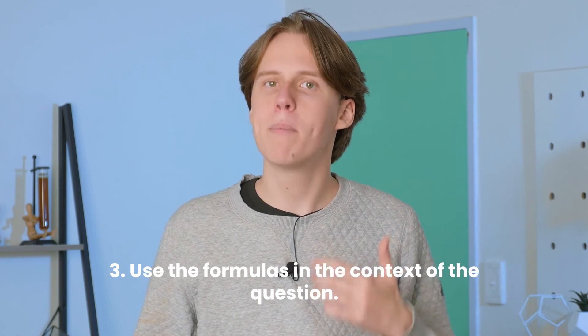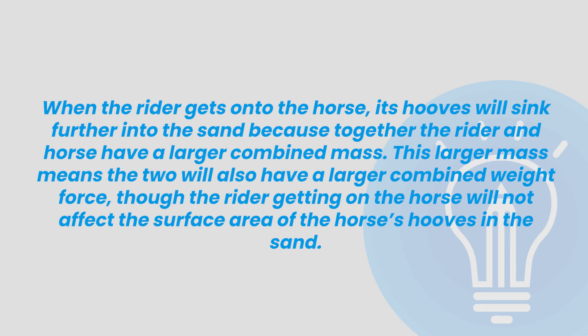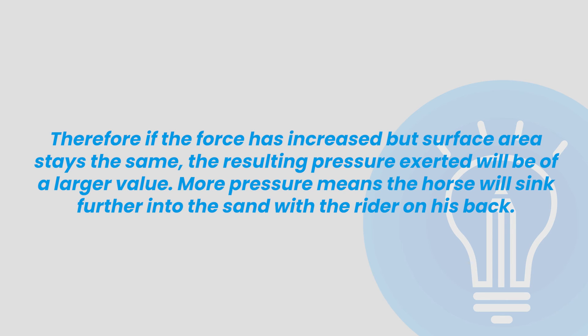Step 3 is using the formula we've linked the question back to in the context of the question. We're looking at what's happening when a person jumps onto a horse standing on some sand and what that's doing to forces and pressure. When the rider gets onto the horse, its hooves will sink further into the sand because together the rider and the horse have a larger combined mass. This larger mass means the two will have a larger combined weight force, though the rider getting on the horse will not affect the surface area of the horse's hooves in the sand. Therefore, if the force has increased but the surface area stays the same, the resulting pressure exerted will be of a larger value. More pressure means the horse will sink further into the sand with the rider on its back.